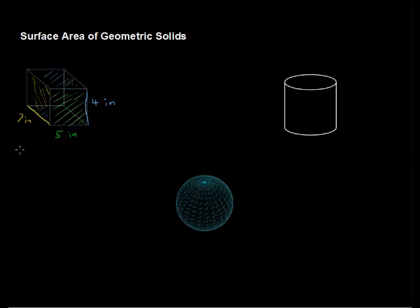So going in green here, the area of this front face is 5 times 4, base times height. I'm going to take that area and multiply it by 2, because we have a front and a back.